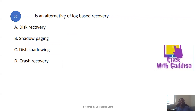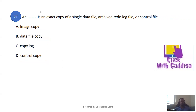Shadow paging is an alternative to log-based recovery. A backup is an exact copy of a single data file, archived redo log file, or control file.